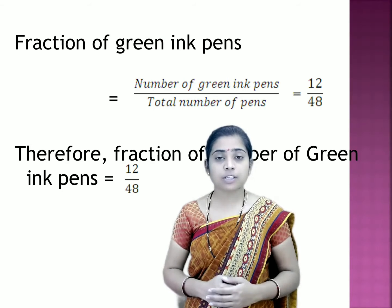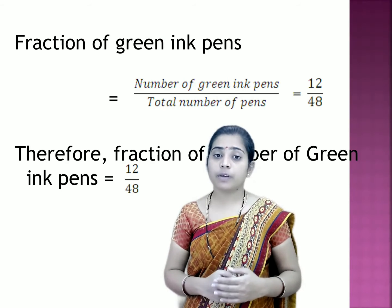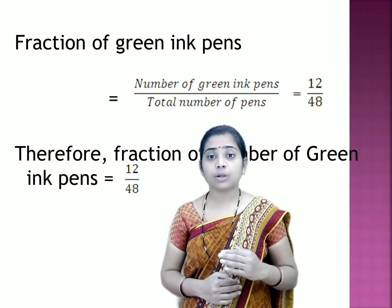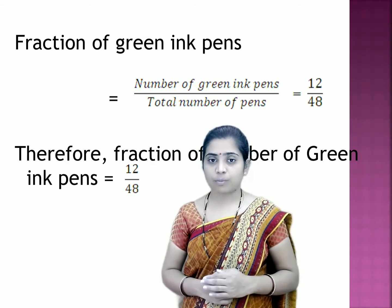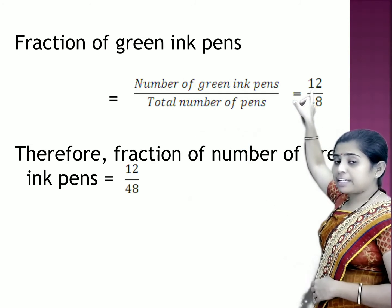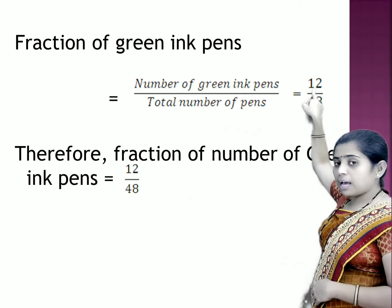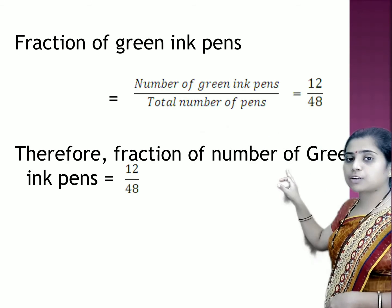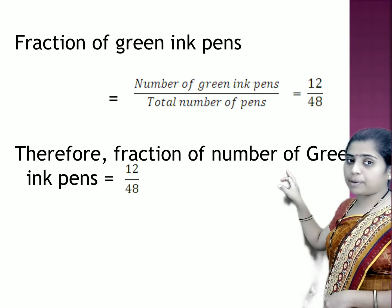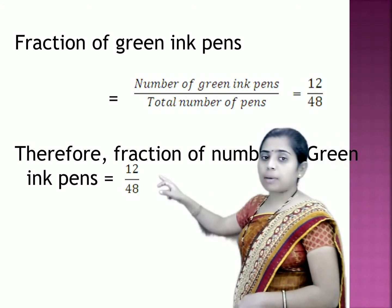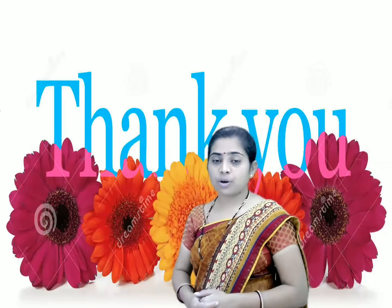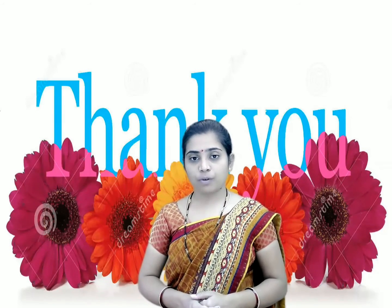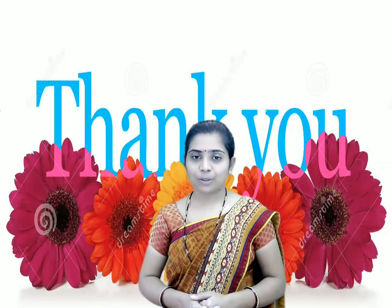To write the fraction of green ink pens, we need to write the total number of green ink pens as the numerator and the total number of pens as the denominator. There were 12 green ink pens, so I wrote 12 as the numerator and 48 as the denominator. Therefore, the fraction for the number of green ink pens is 12 by 48. We saw a few examples based on the concept of fraction of a collection. I hope you understood it. Thank you.